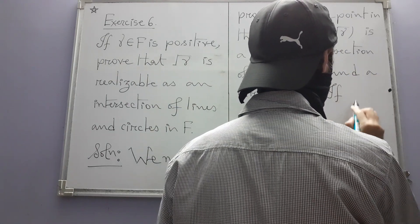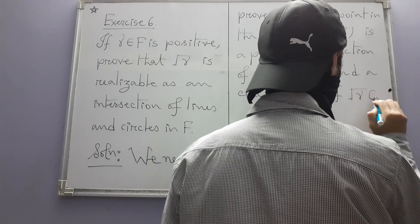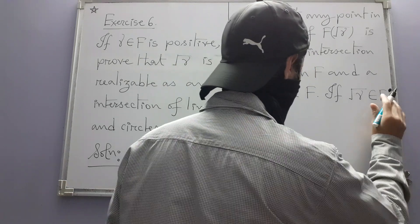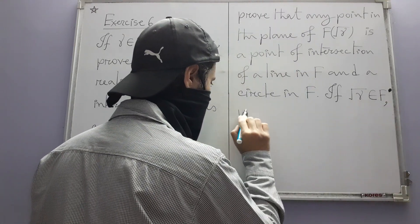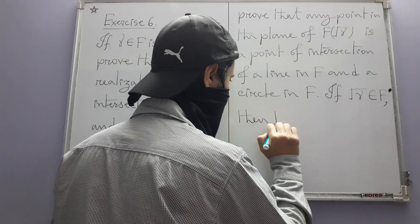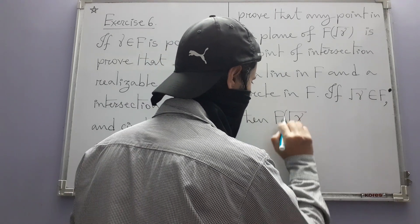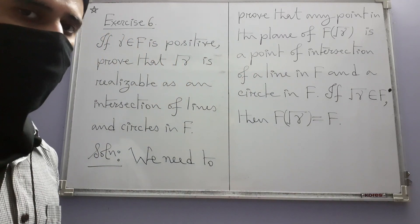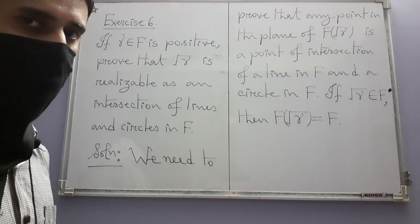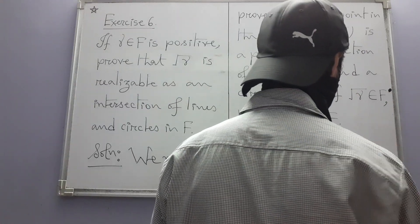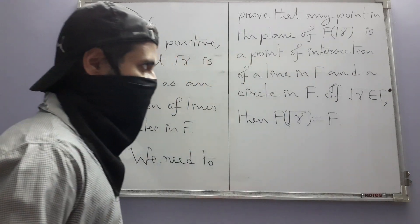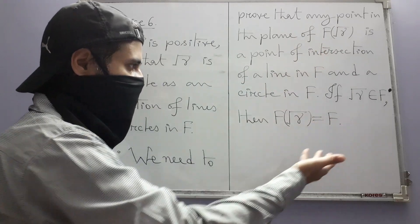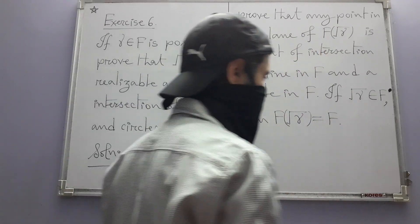The easier case is of course the one where root gamma belongs to F. If the square root of gamma belongs to F, then our extension is nothing but F itself, because if you adjoin any element of F to F you are not going to get anything new — you get F back. So in this case any point in the plane of this extension is actually any point in the plane of F itself.